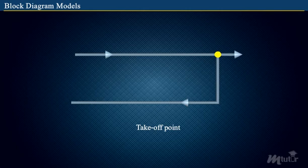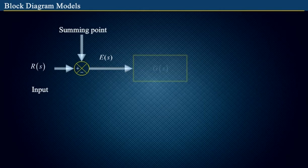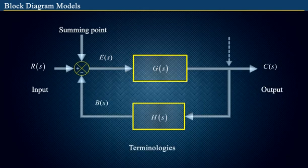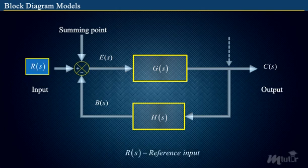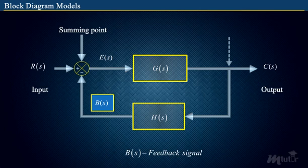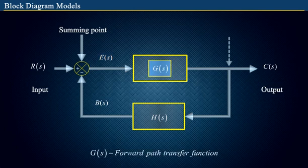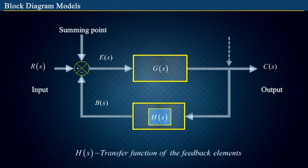Now let us see the block diagram models for closed-loop and multiple input multiple output systems. The block diagram of a negative feedback system is shown on the screen. Now let us see the terminologies used in the block diagram of a control system. R of s is the reference input. C of s is the output signal. V of s is the feedback signal. E of s is the error signal or actuating signal. G of s is the forward path transfer function. H of s is the transfer function of the feedback elements.